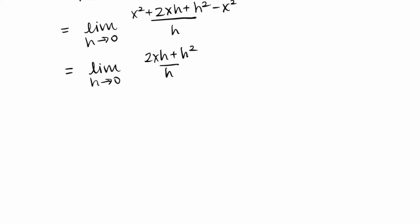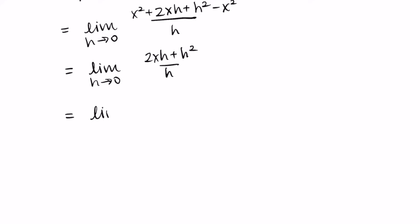We just have to keep going with our simplifying. I see that in the numerator we have h's in both terms so I'm going to factor an h out. I'm left with h times 2x plus h all divided by h. Then those h's will cancel and so I'm left with 2x plus h.